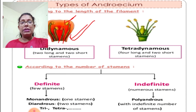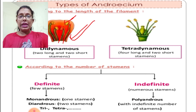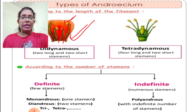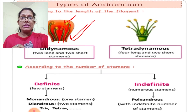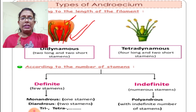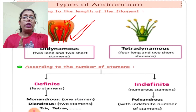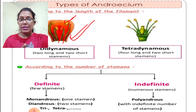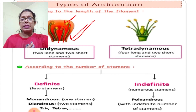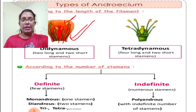Based on the number of stamens: if one stamen is present it is monandrous; if two, it is diandrous; and so on. If many stamens are present, it is called polyandrous. So androecium can be classified both by filament length and by number of stamens.